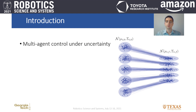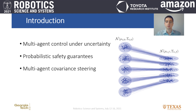Multi-agent control is a field with several robotics applications where a team of agents cooperates to complete specific tasks. Having probabilistic guarantees on the stochastic state trajectories of these agents would be ideal to ensure their safe operation and optimal performance. Towards that direction, we exploit recent results in covariance steering to address the problem of guiding a team of agents to prescribed goal state distributions while satisfying probabilistic interagent constraints.